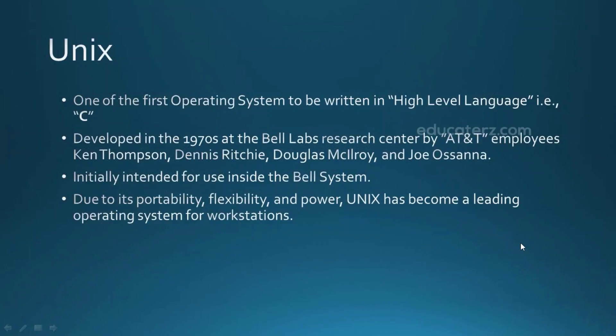Initially, UNIX was intended to be internal software at Bell Systems. But due to its power, flexibility, and reliable nature, it became more and more popular and they started licensing the UNIX kernel. This led to a variety of both academic and commercial variants of UNIX from vendors such as Sun Microsystems, Microsoft, and the University of California, Berkeley Software Distribution.